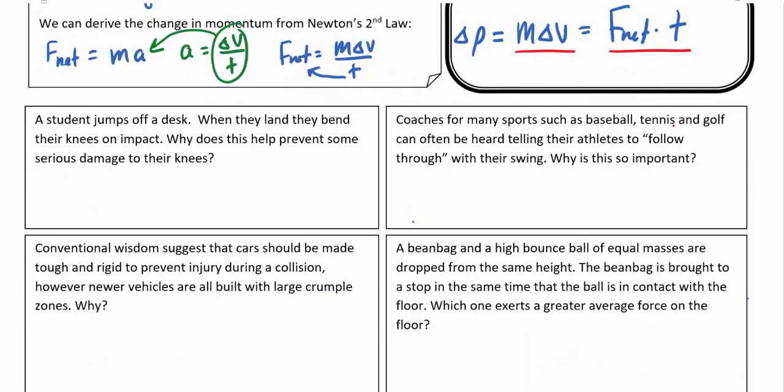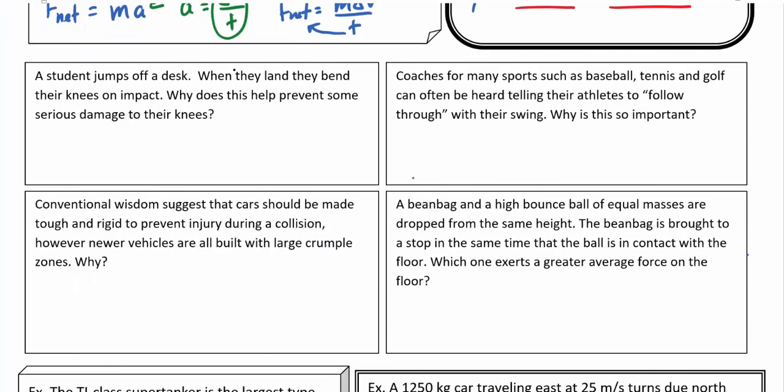So to think about this, we've got a few situations here, a few examples where we can relate this. Imagine a student jumping off their desk. When they land they bend their knees, hopefully, when they hit the floor. They bend their knees and it kind of cushions the landing. Why does this help prevent serious damage to their knees? If we think of this, F_net*t is equal to m Δv, we can think of which of these variables are going to be constant and which ones are going to change based on whether or not they bend their knees. Well, assuming it's the same student bending their knees or not, the mass would just be a constant.